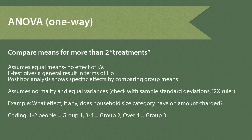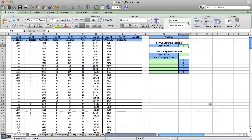We check the assumption of equal variation by using the standard deviations of our sample data and employ the two-times rule. For example, what effect, if any, does household size category have on amount charged? Household size is a quantitative variable, but to use it as an independent variable for ANOVA testing, we have recoded it into categories: household sizes of 1 or 2 are labeled category 1, 3 or 4 are group 2, and household sizes over 4 are group 3. Before running this ANOVA test, let's check the required assumptions and screen for any outliers.